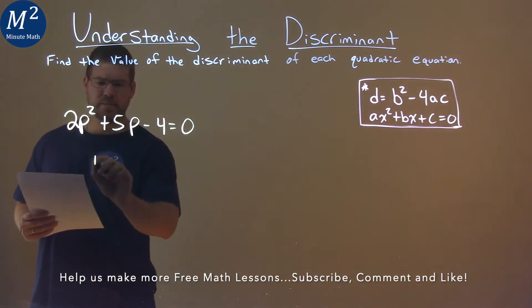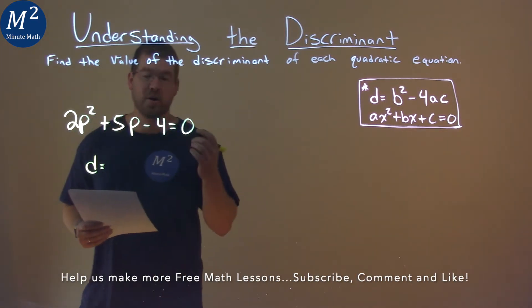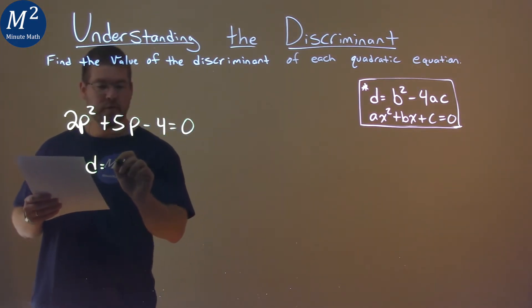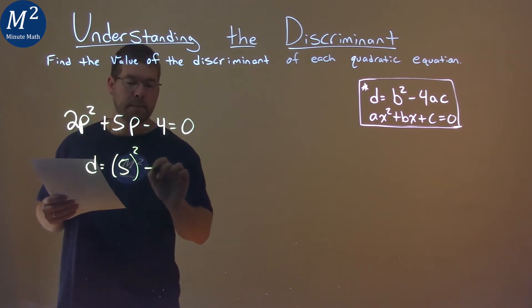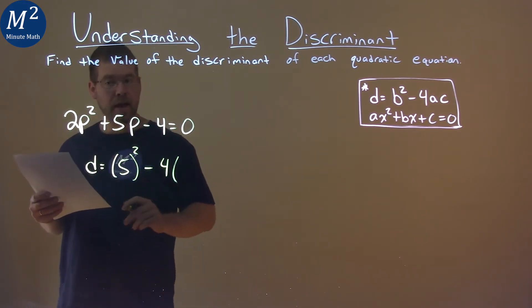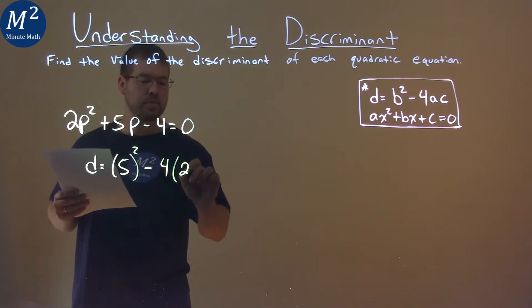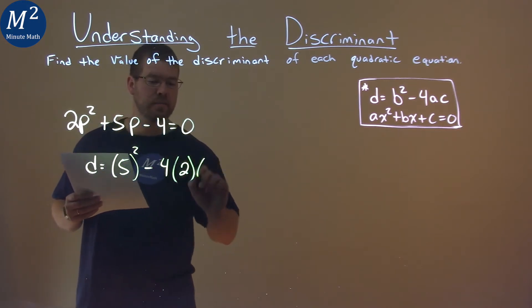When we use our formula here, our discriminant is equal to our b value, in this case it's 5 squared minus 4 times our a value, which is 2, times our c value, negative 4.